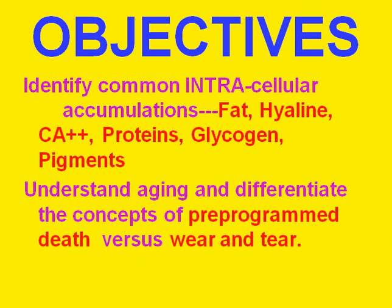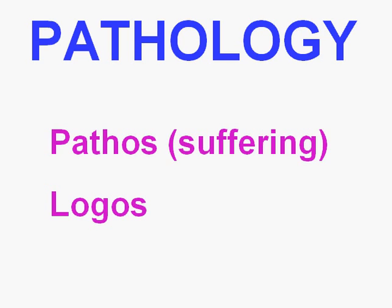Last but not least, we're going to talk about intracellular accumulations of all types: carbohydrates, fats, proteins, pigments, and so on. And then at the end, we're going to make a little philosophical concept of why cells die or get injured and why people get injured or die. So here's the easy thing to remember.